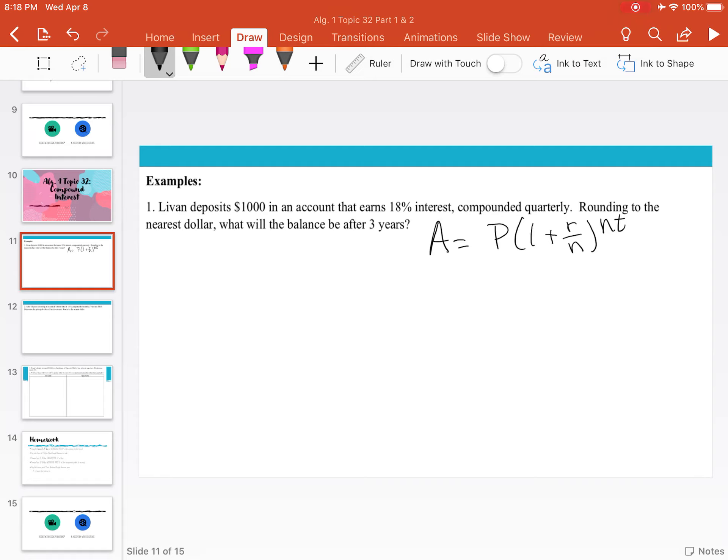But specifically with compound interest problems, because I have so many variables, I like to identify what value I'm going to plug into each variable. So A, P, R, N, and T. Now A is the final amount. Do we know what Levon has after three years? No. So this is what we're trying to figure out.